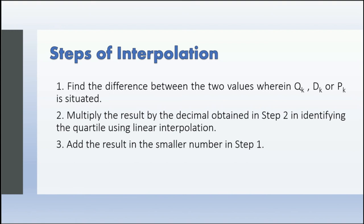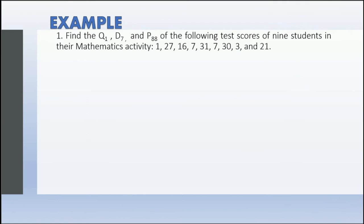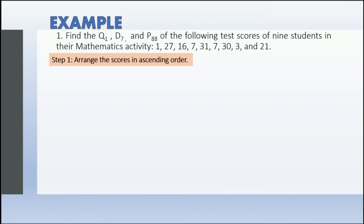For example, find quartile 1, decile 7, and percentile 88 of the following test scores of 9 students: 1, 27, 16, 7, 31, 7, 30, 3, and 21. Step 1: arrange the scores in ascending order.